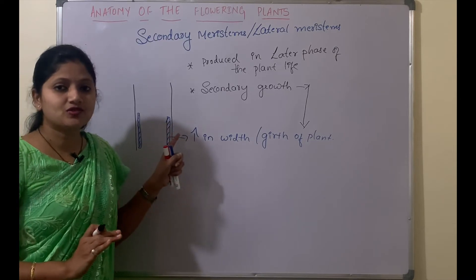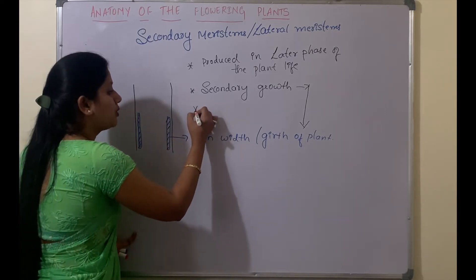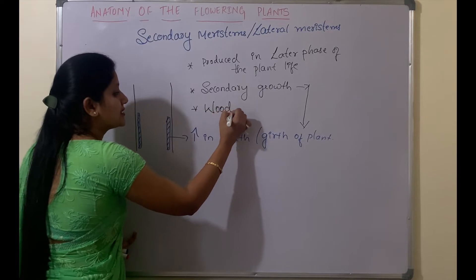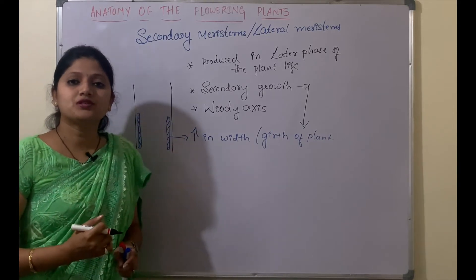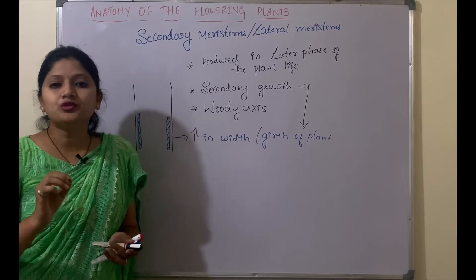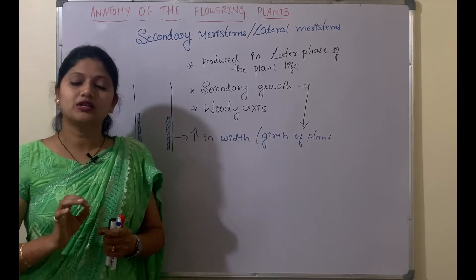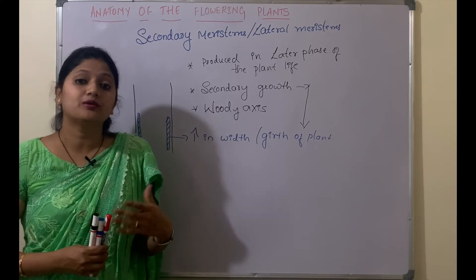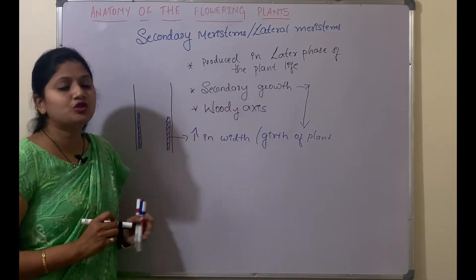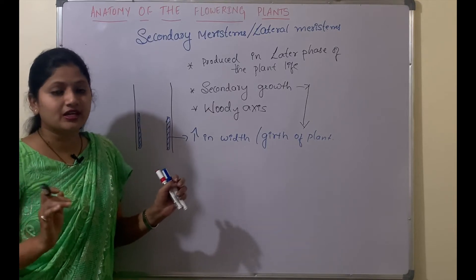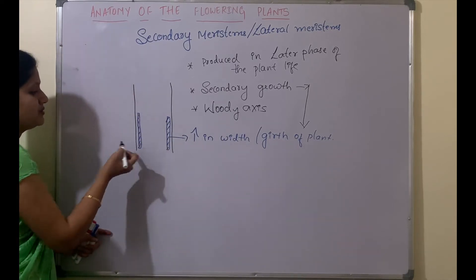These secondary meristems or lateral meristems are not present in all plants. They are present only in plants which show a woody axis. If you observe a growing plant in its early ages, the plant will be green in color and quite tender. That phase is the growing or primary phase. Later on, when secondary growth starts, the width of the plant begins increasing.